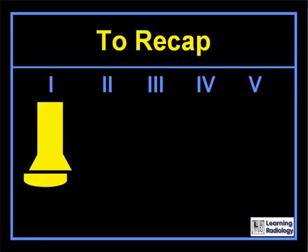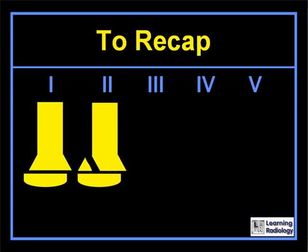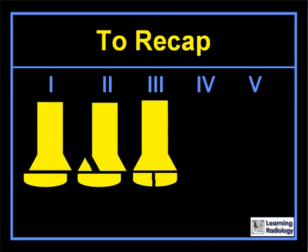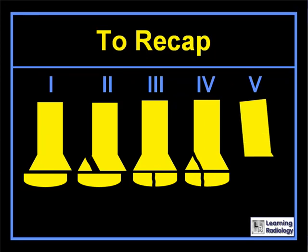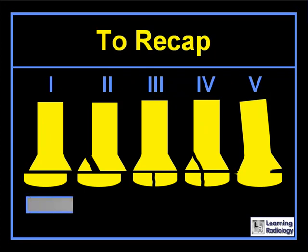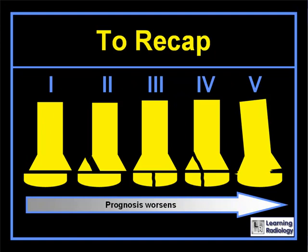To recap: Salter-1 fractures are fractures through the epiphyseal plate alone. Salter-2 fractures are fractures through the epiphyseal plate and the metaphysis. Salter-3 fractures are fractures through the epiphyseal plate and the epiphysis. Salter-4 fractures are fractures through the epiphyseal plate, the metaphysis, and the epiphysis. Salter-5 fractures are crush injuries to the epiphyseal plate that can result in angular deformities. As we move from Salter-Harris 1 to Salter-Harris 5, the prognosis worsens.